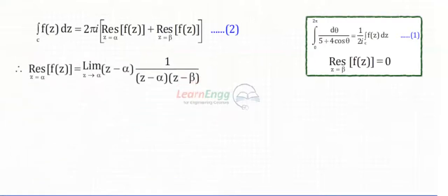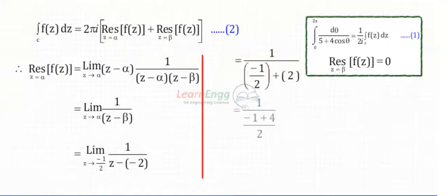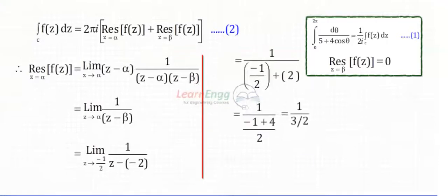By simplifying and applying the limits, we get the residue at z = α: f(z) = 2/3.